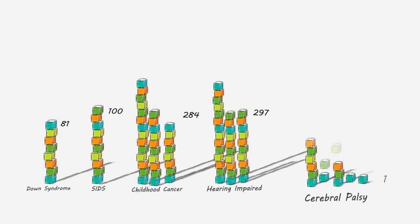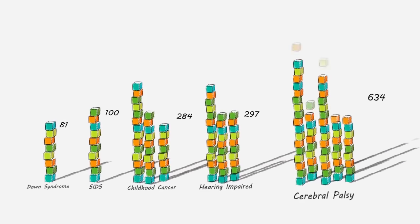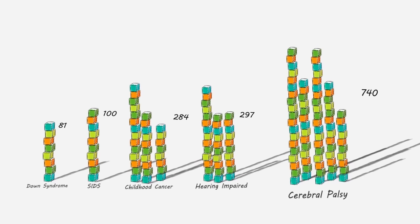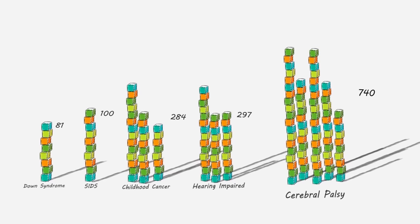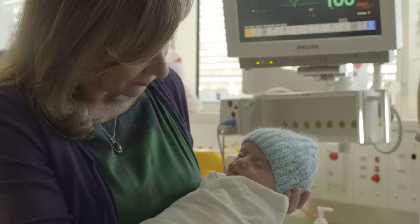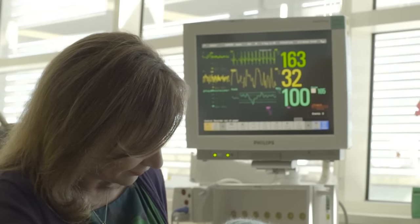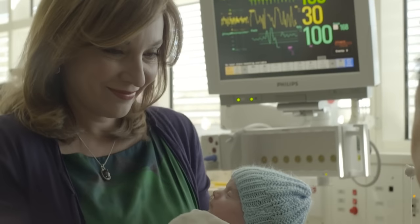Cerebral palsy is the most common physical disability in childhood, with 1 in 500 children born in Australia each year. Cerebral palsy affects people in different ways, and this is largely due to the location of the injury in the brain.